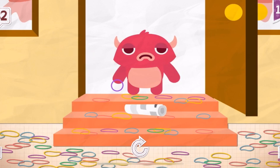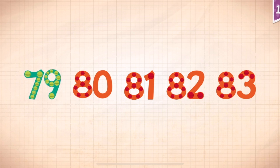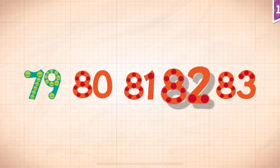Pinkerton once had a ball made of 82 rubber bands. Count by ones starting at 79: 79, 80, 81, 82, 83.